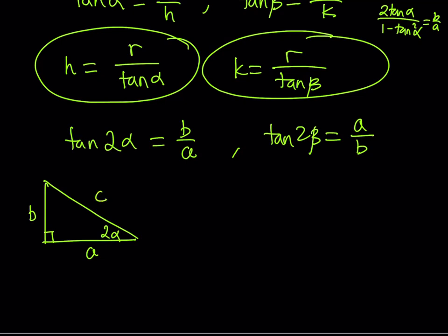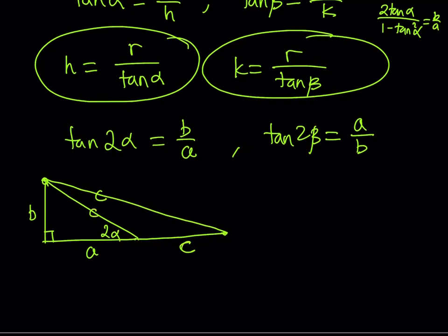I'm going to extend the base as much as c and then connect these two points. What am I getting? This is c and this is c. I'm getting an isosceles triangle. Isn't that beautiful?